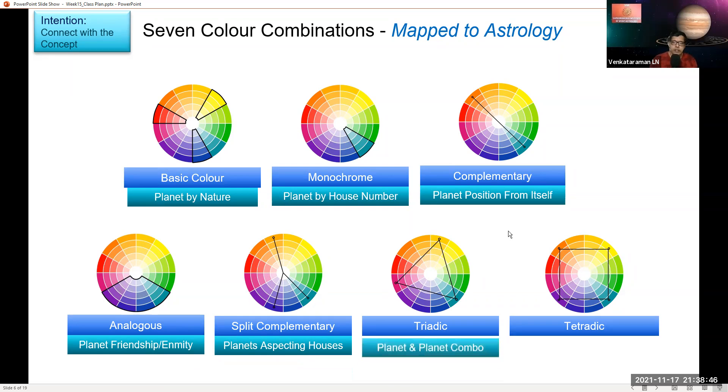Then triadic, it is like planet with planet combo. It is a bit different from planet friendship. There are some other, for example, called yogas. Certain specific combination will be considered very good, and they might also be like bad yogas. That's what it's trying to indicate, not the friendship one.